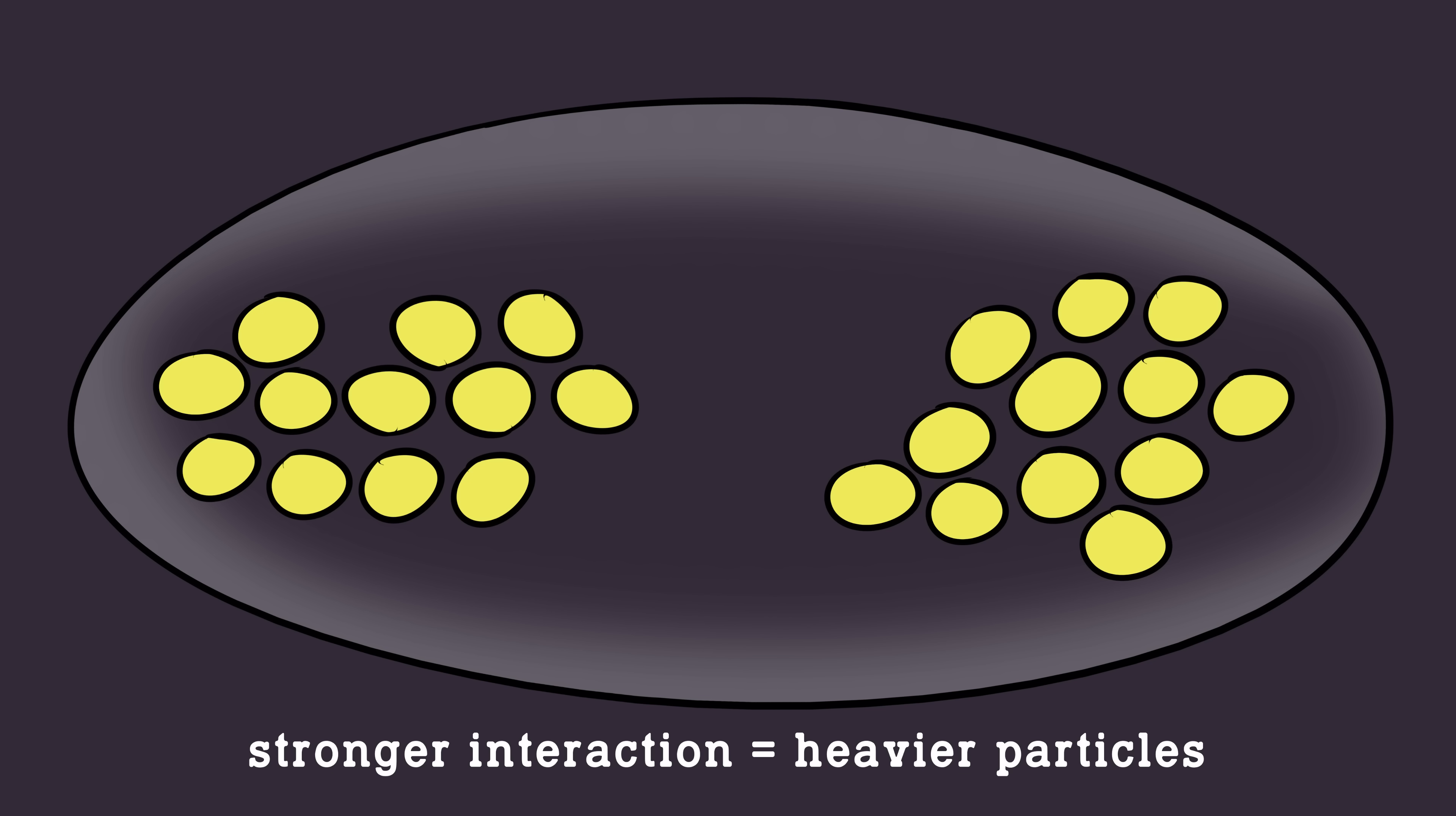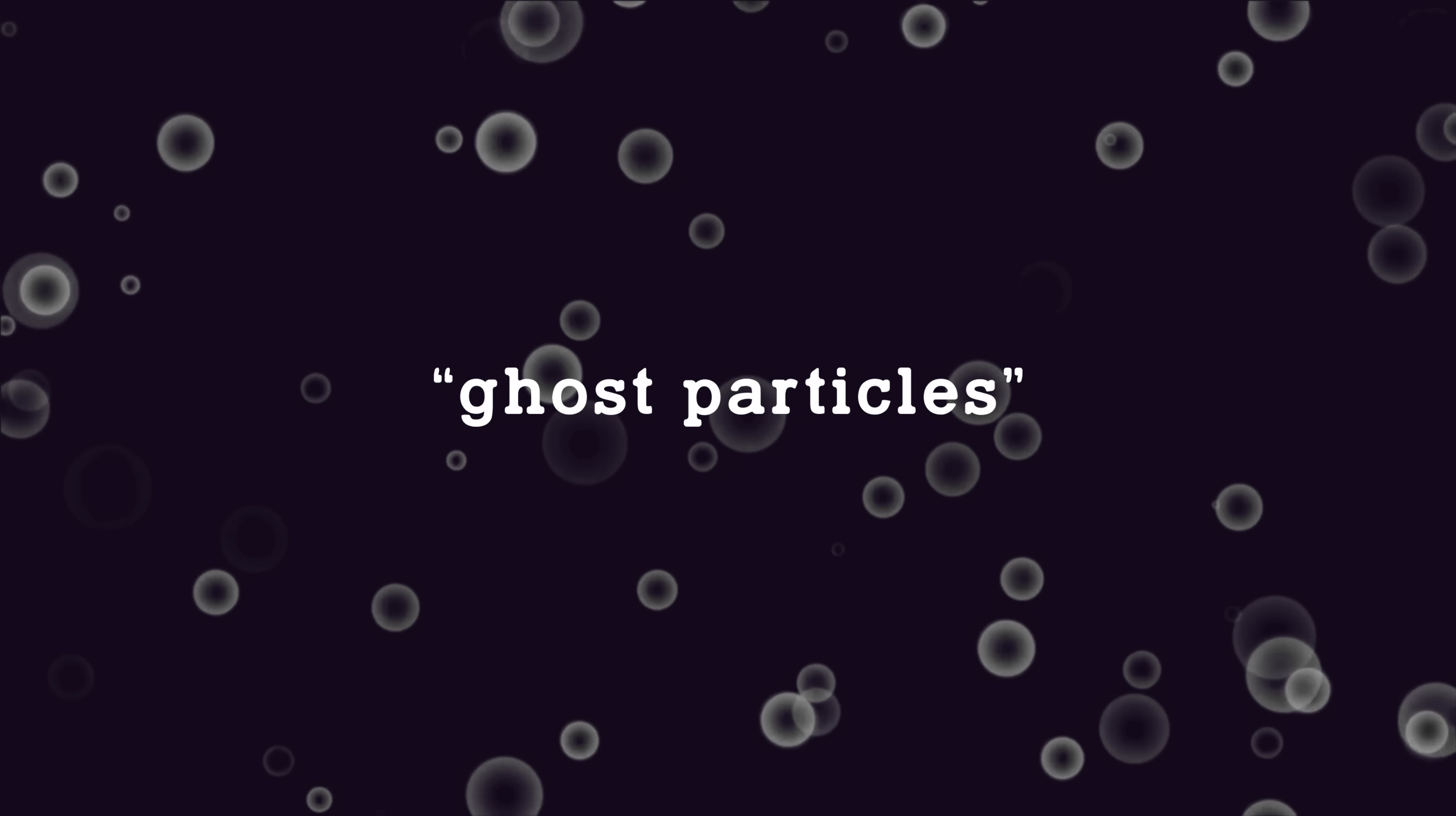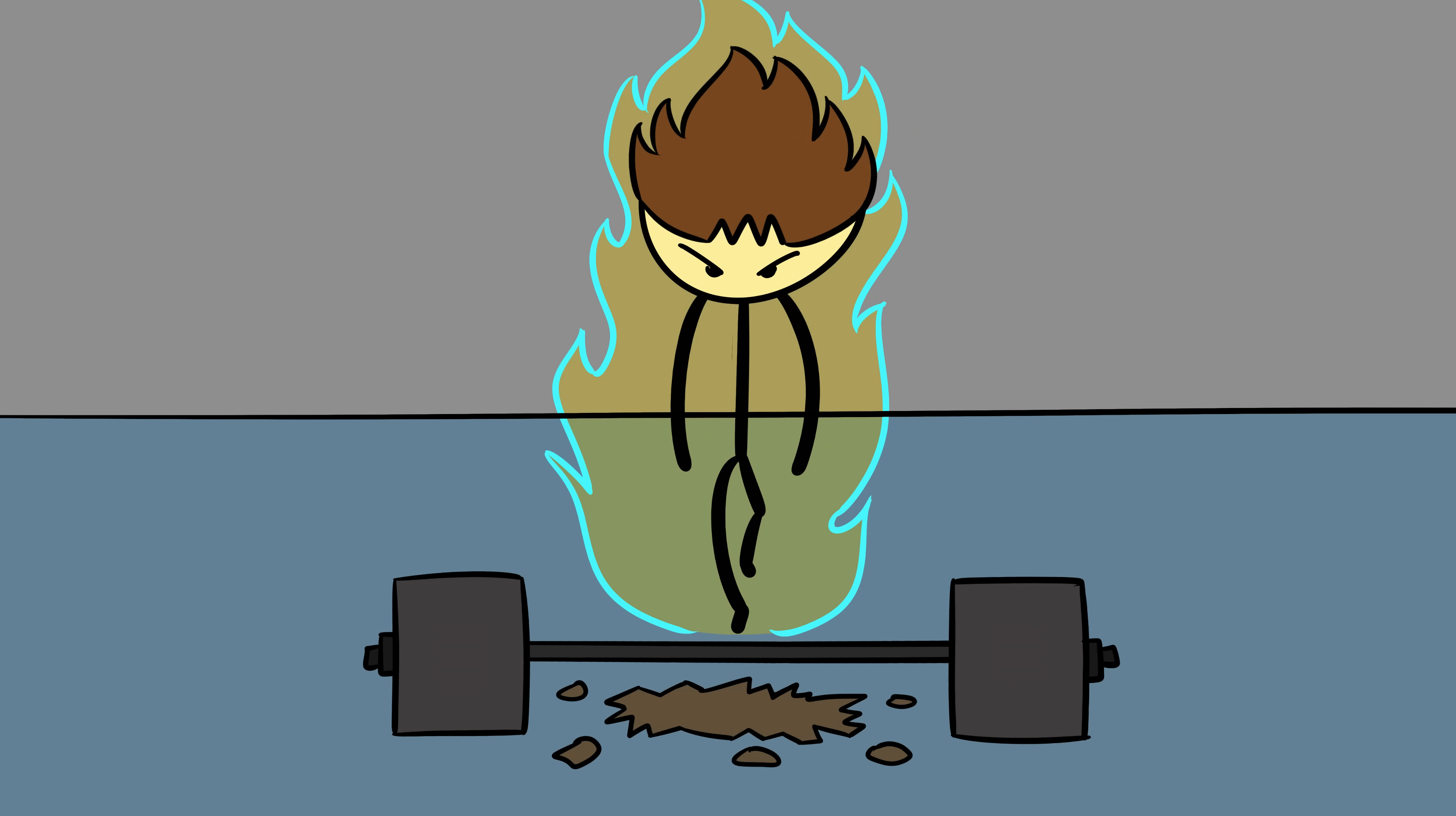For one, the Higgs field doesn't explain why particles have exactly the masses they do. Why is the top quark as heavy as a gold atom, while neutrinos are almost weightless? Why does the Higgs itself exist at the energy level it does? It's as if the universe set a bunch of dials to random values that just happen to work. And even more confusing, most of your mass doesn't come from the Higgs field at all. Around 99% of it comes from the energy of the strong nuclear force binding protons and neutrons together. In other words, most of what makes you you is pure energy, trapped by invisible glue.